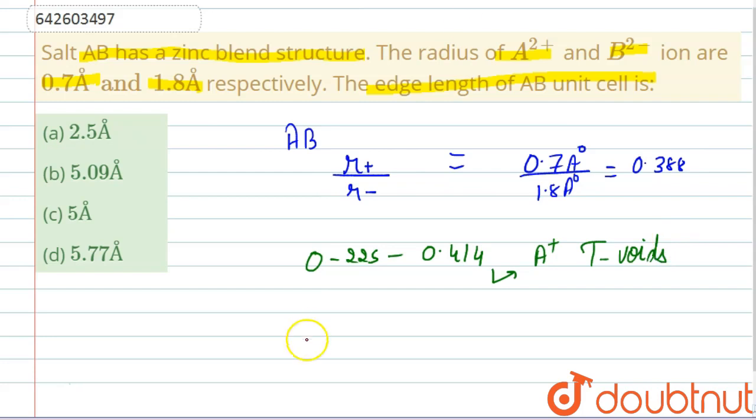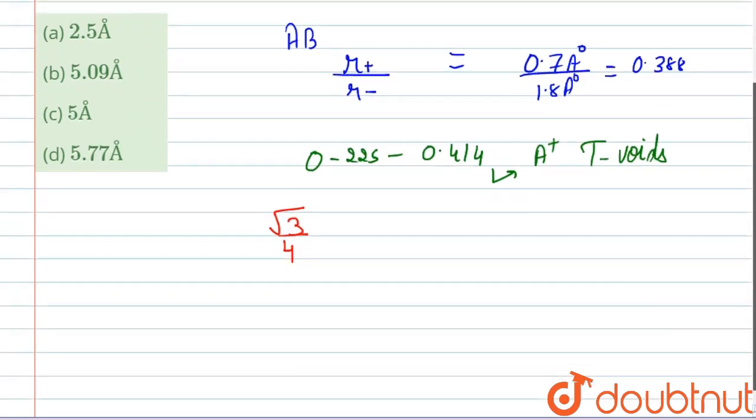We know that tetrahedral voids are present at one-fourth of the body diagonal. So this relation is valid: √3/4, because the body diagonal length is √3 times the edge length.